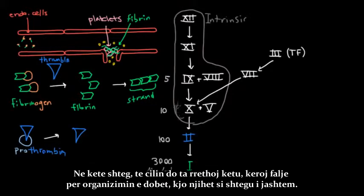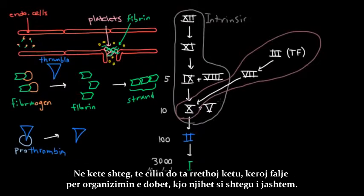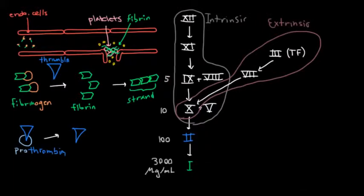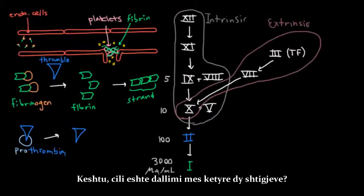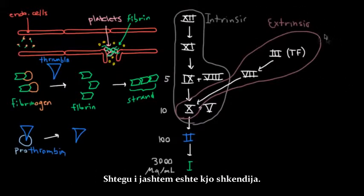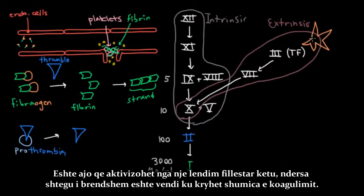And this pathway, which I'll circle here, and I apologize for the poor organization, this one is known as the extrinsic pathway. So what's the difference between these two pathways? Well, it turns out that the extrinsic pathway is the spark. It's the one that gets activated by the original insult over here, whereas the intrinsic pathway is kind of like the workhorse that really gets most of the coagulation done.